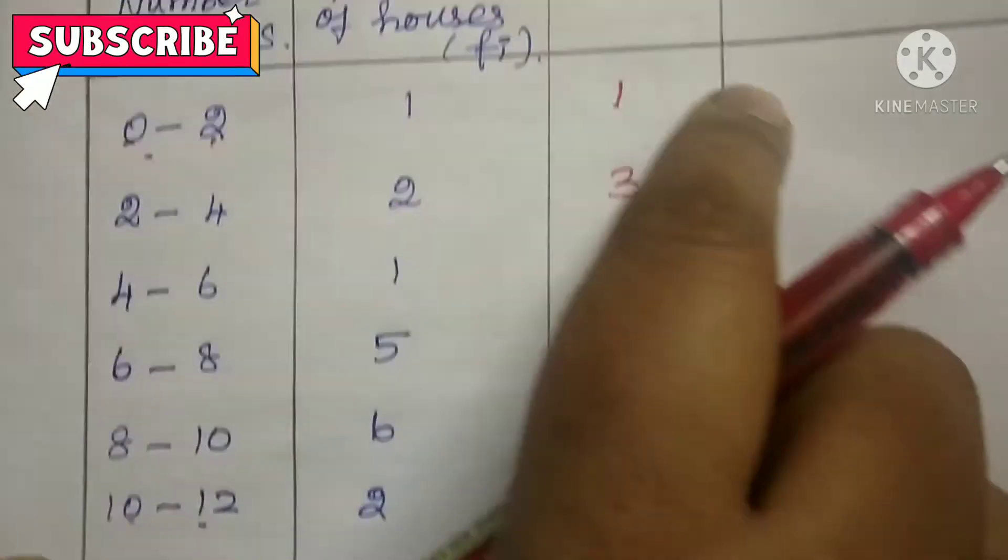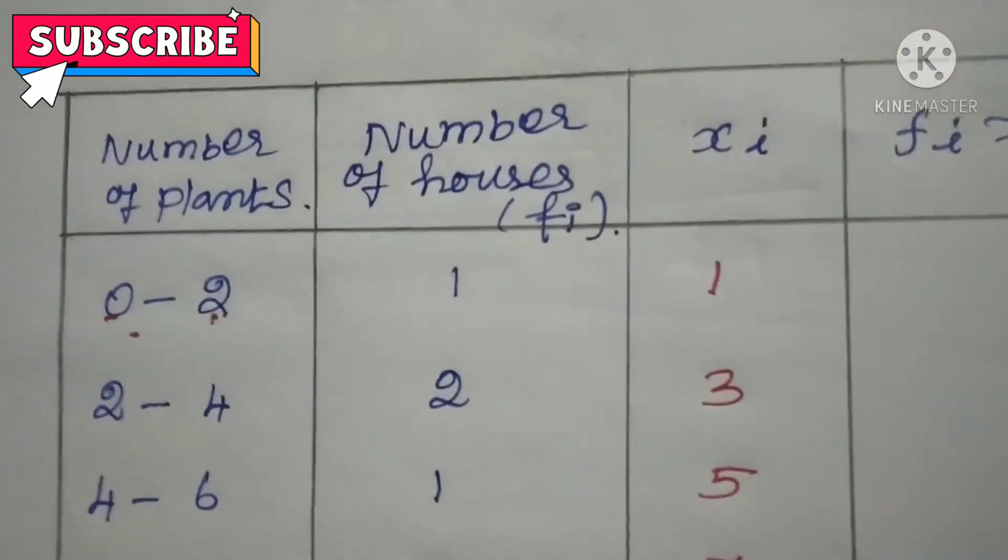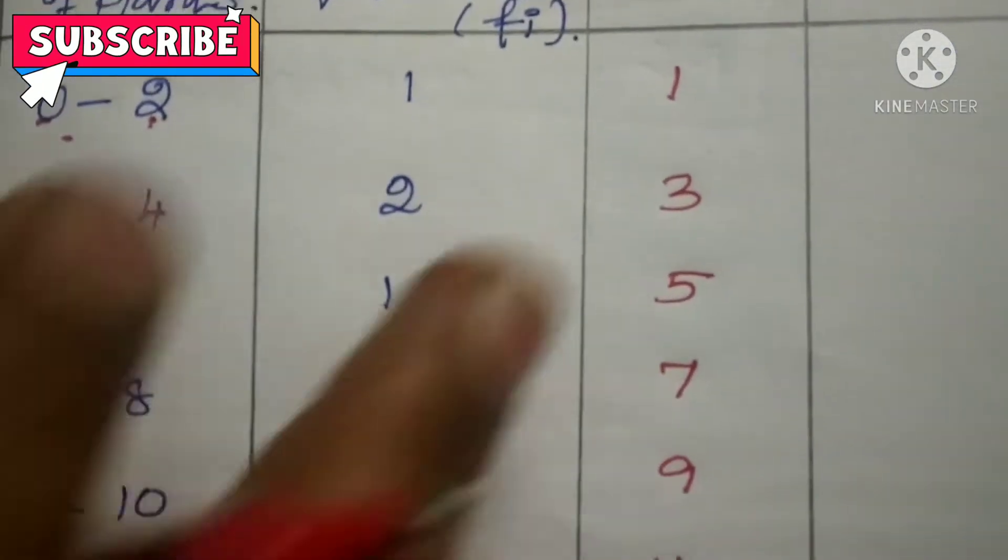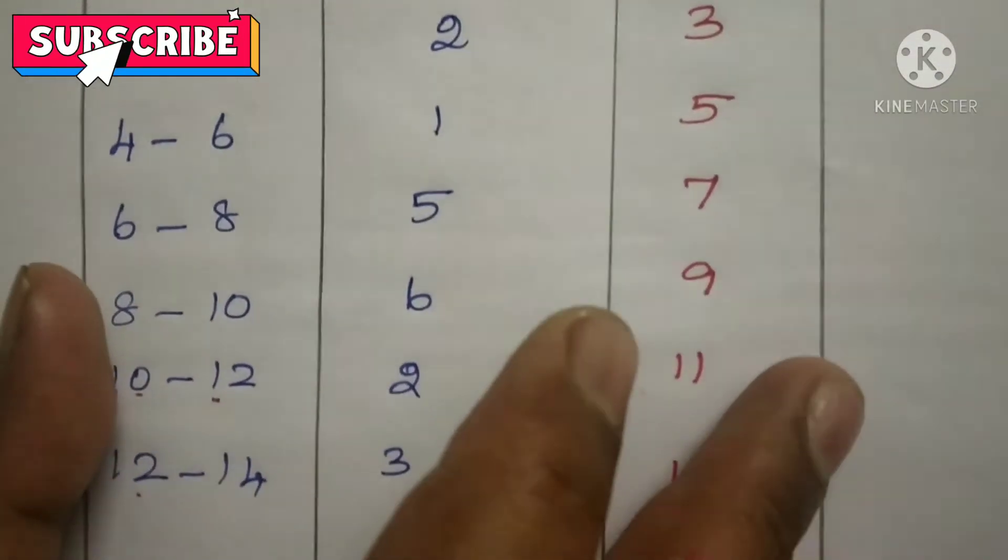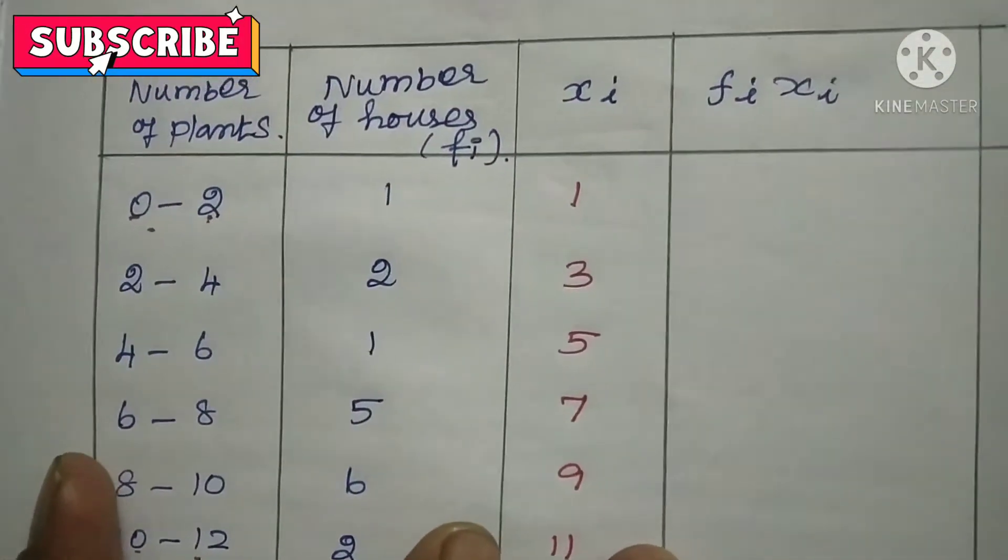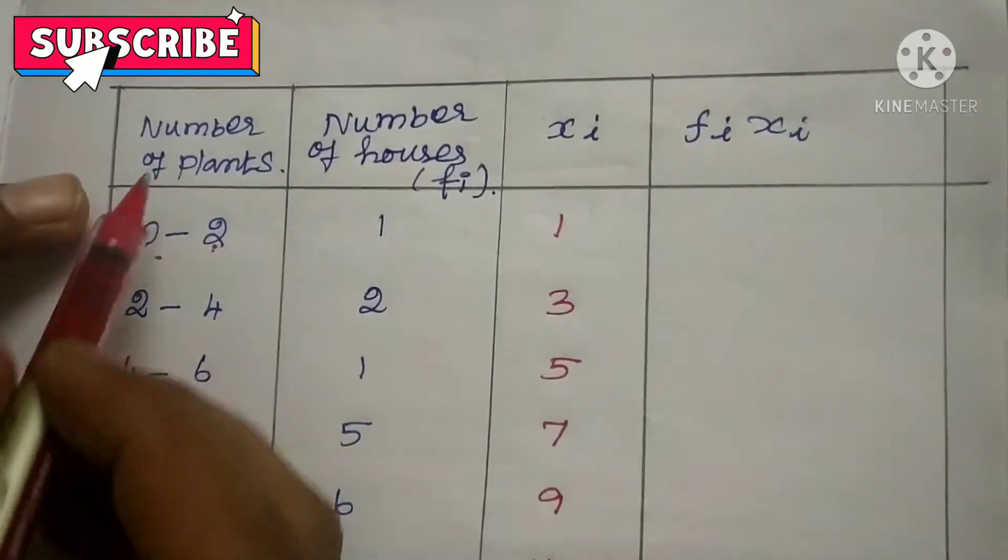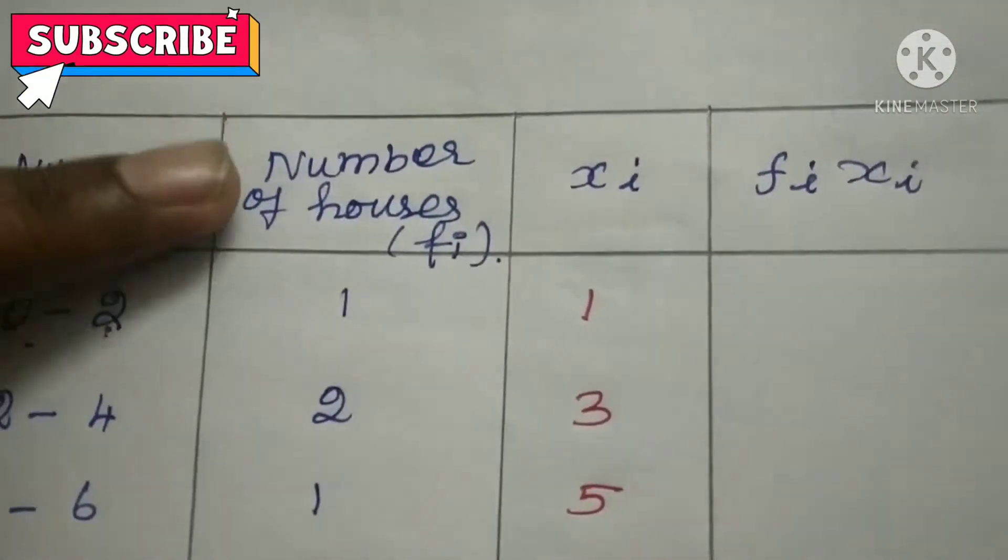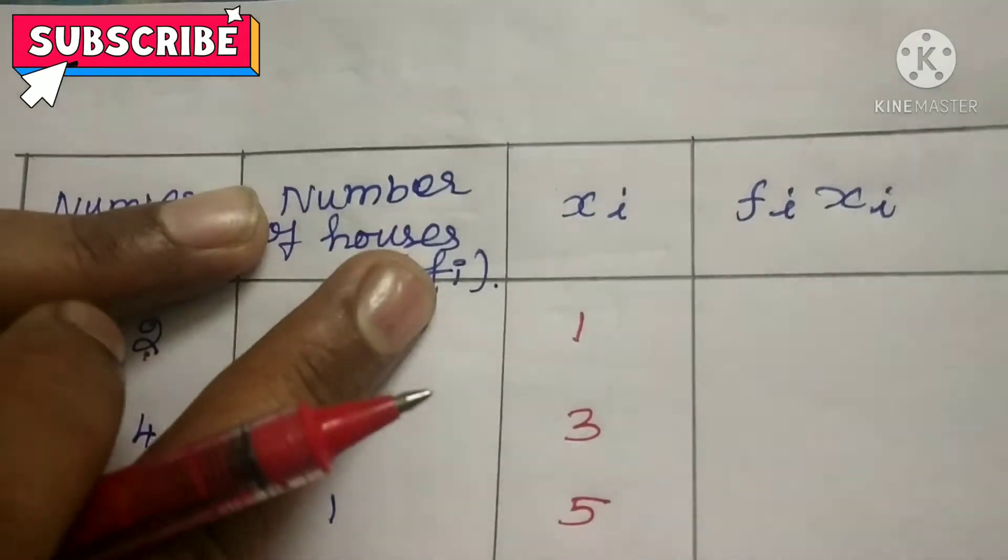So you have to write it straight. First you have to draw the columns. For direct mean method you need 4 columns. That is number of plants, number of houses which is frequency Fi, then Xi.